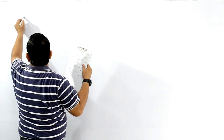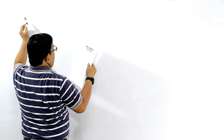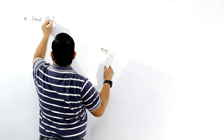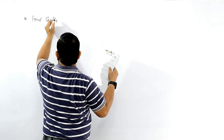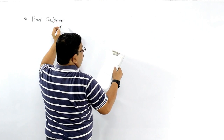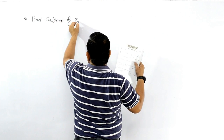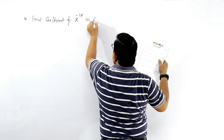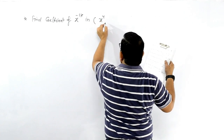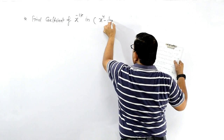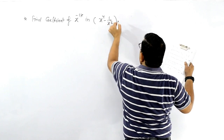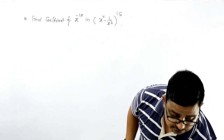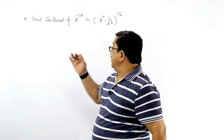Next, find the coefficient of x to the power minus 17 in (x to the power 4 minus 1 upon x cube) to the power 15. We have to find out the coefficient of x to the power minus 17.